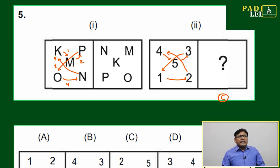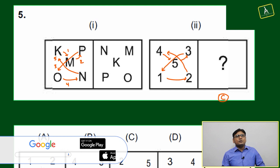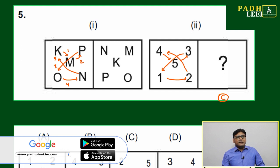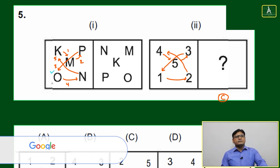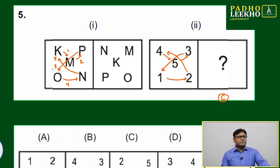Like here, K, M, P, O, N is given. K is coming to the center. This is your step one. Step two, the center element is going to here. Step three, this is coming here.